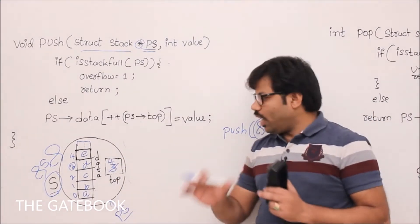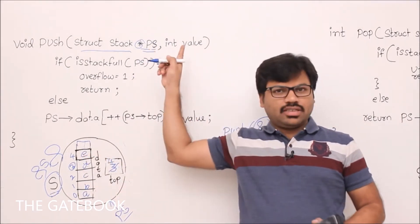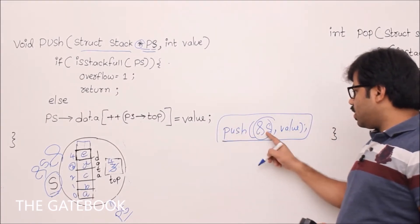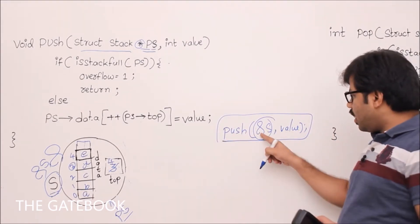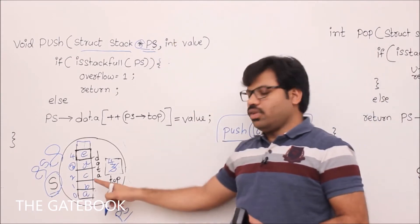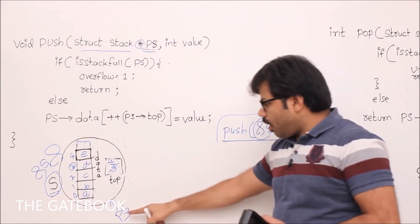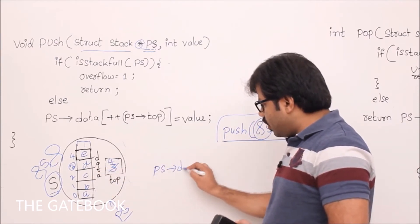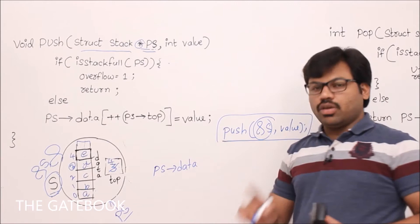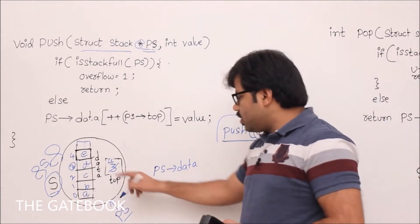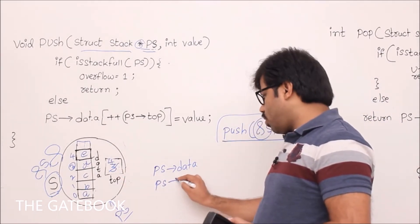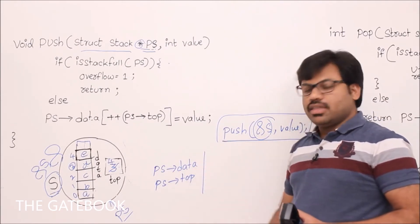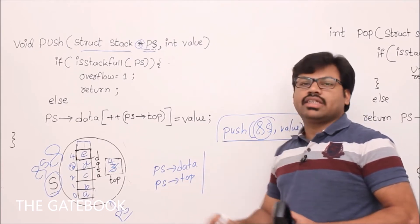We will see how to access the structure with respect to pointer PS. The caller calls push with address of S and value, and PS becomes a pointer to this structure. When you have a pointer to a structure, to access data the syntax is PS->data. From now onwards, whenever you want to access data, use PS->data. To access top, use PS->top.